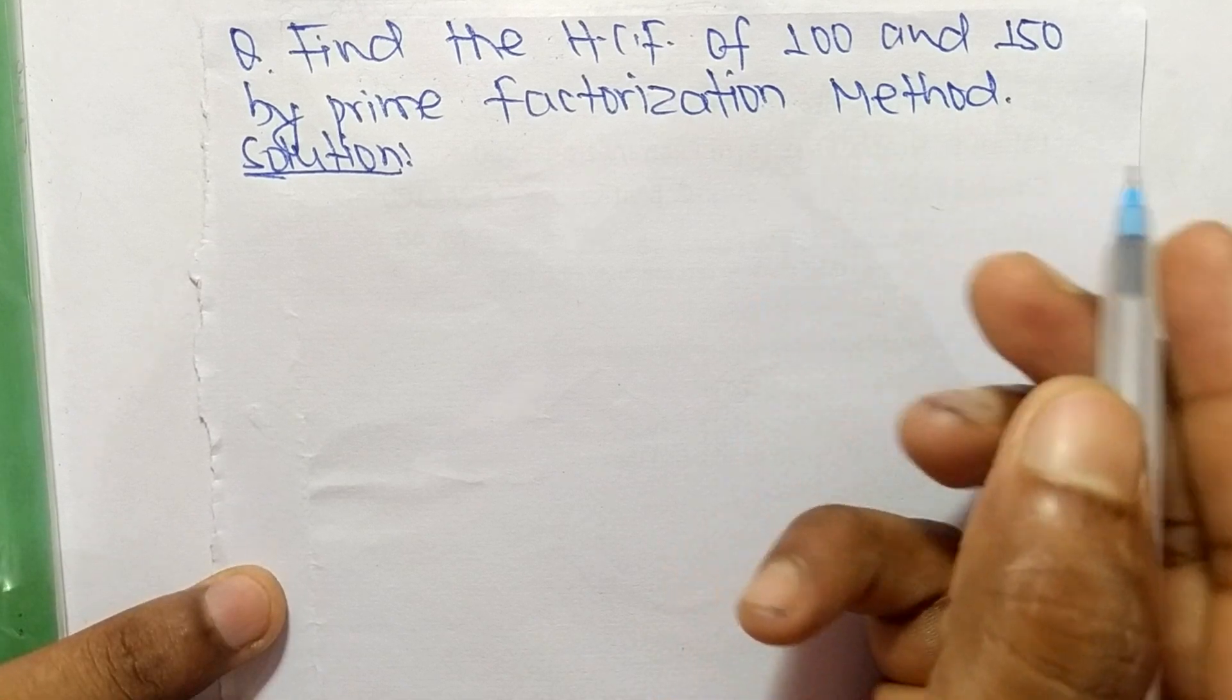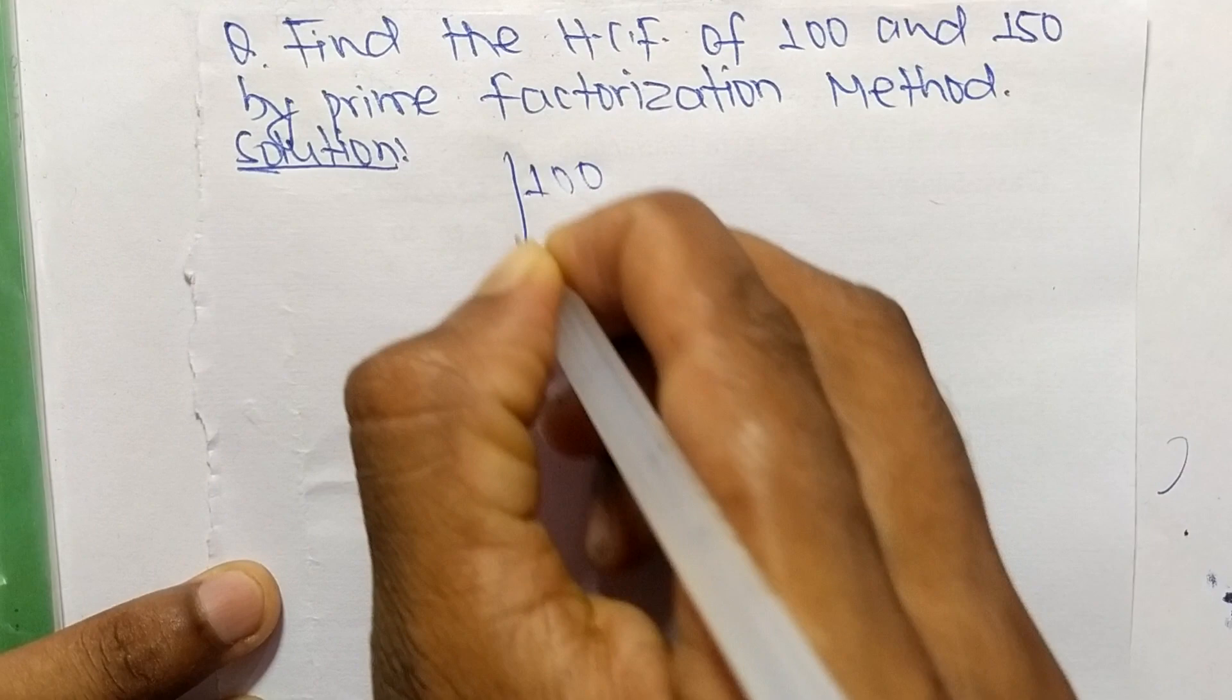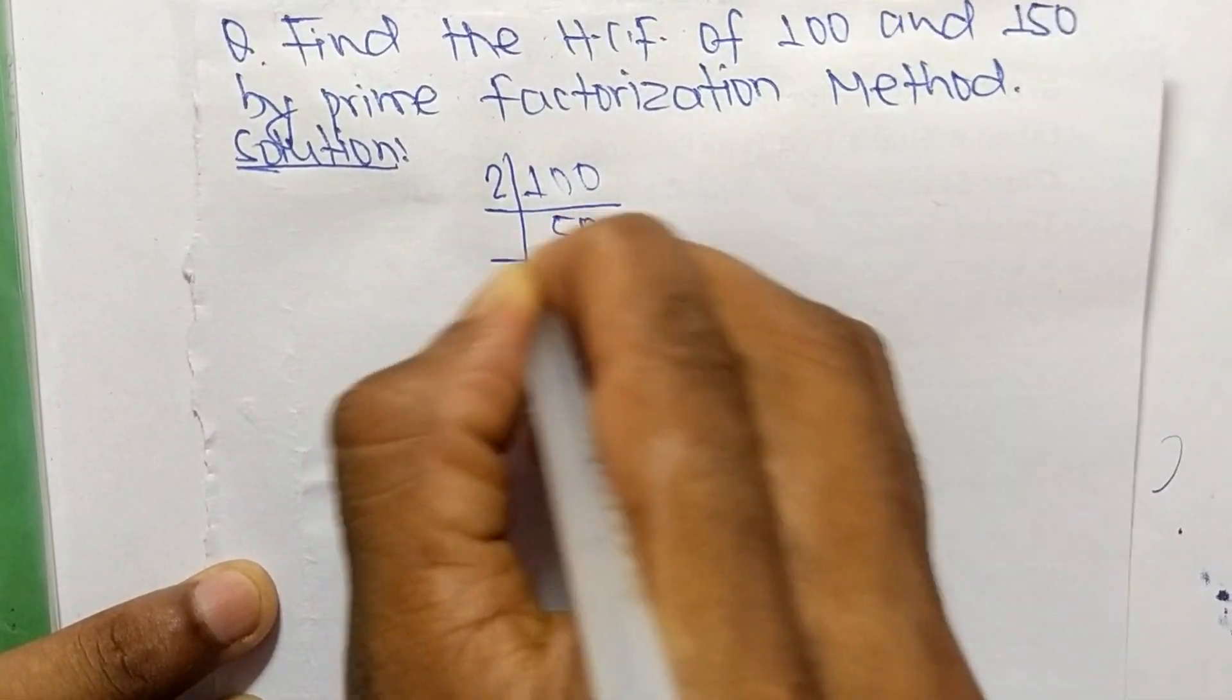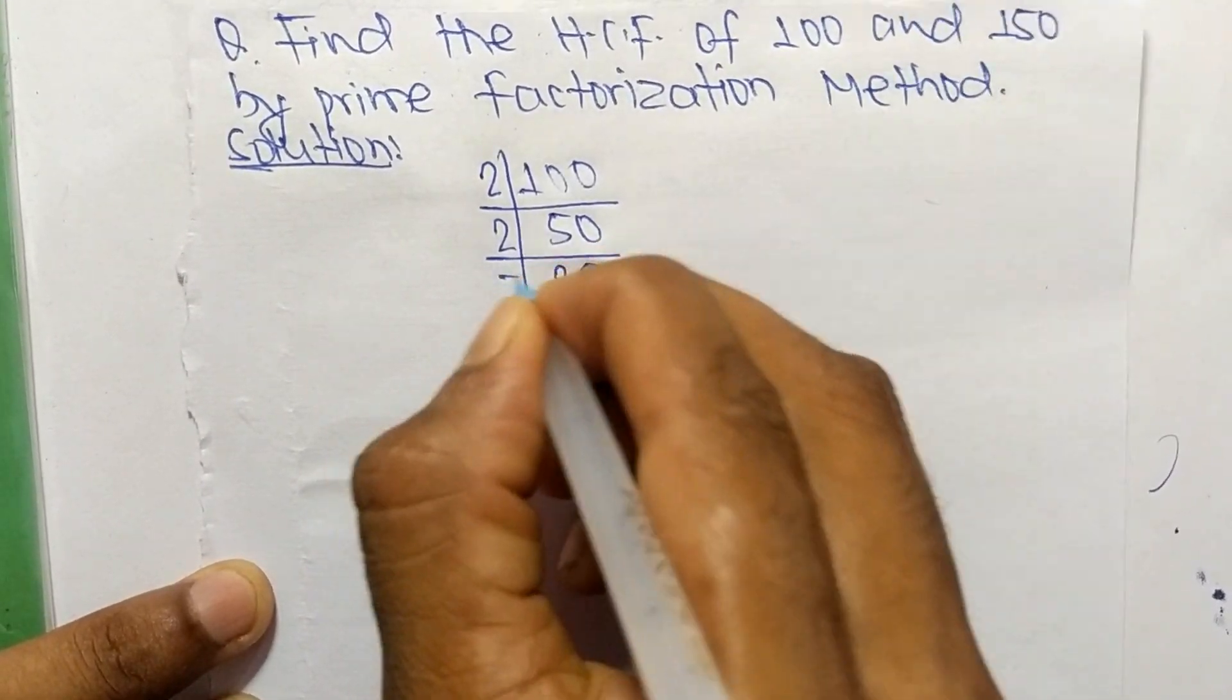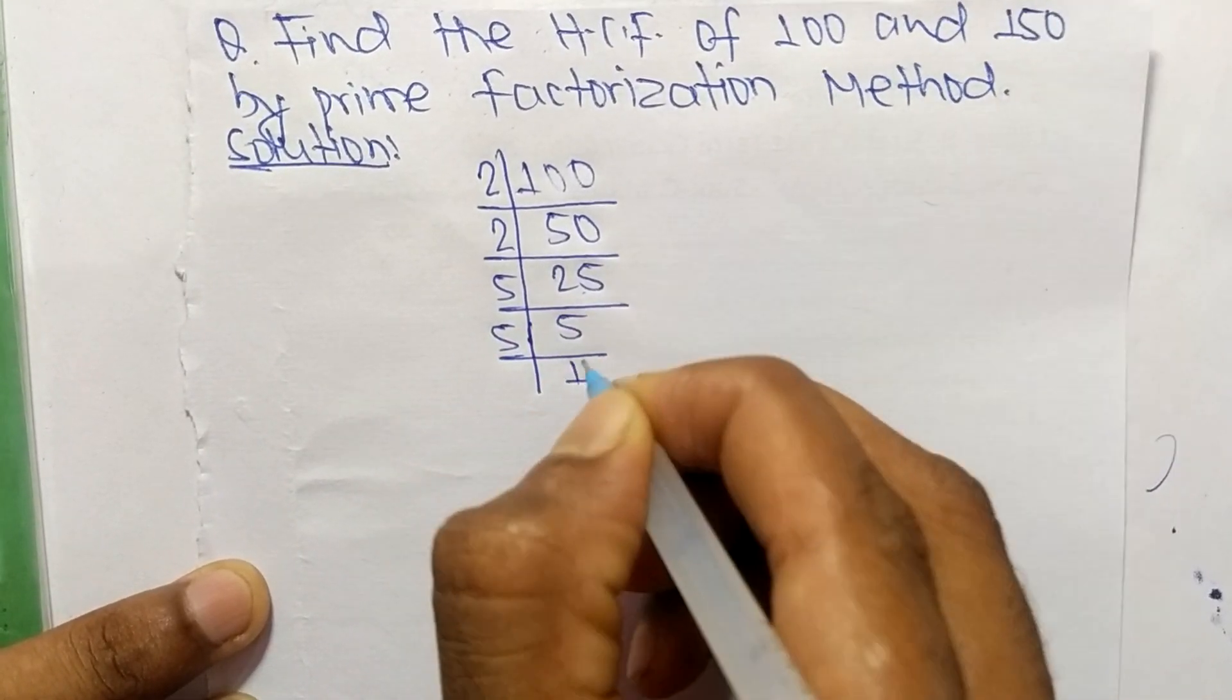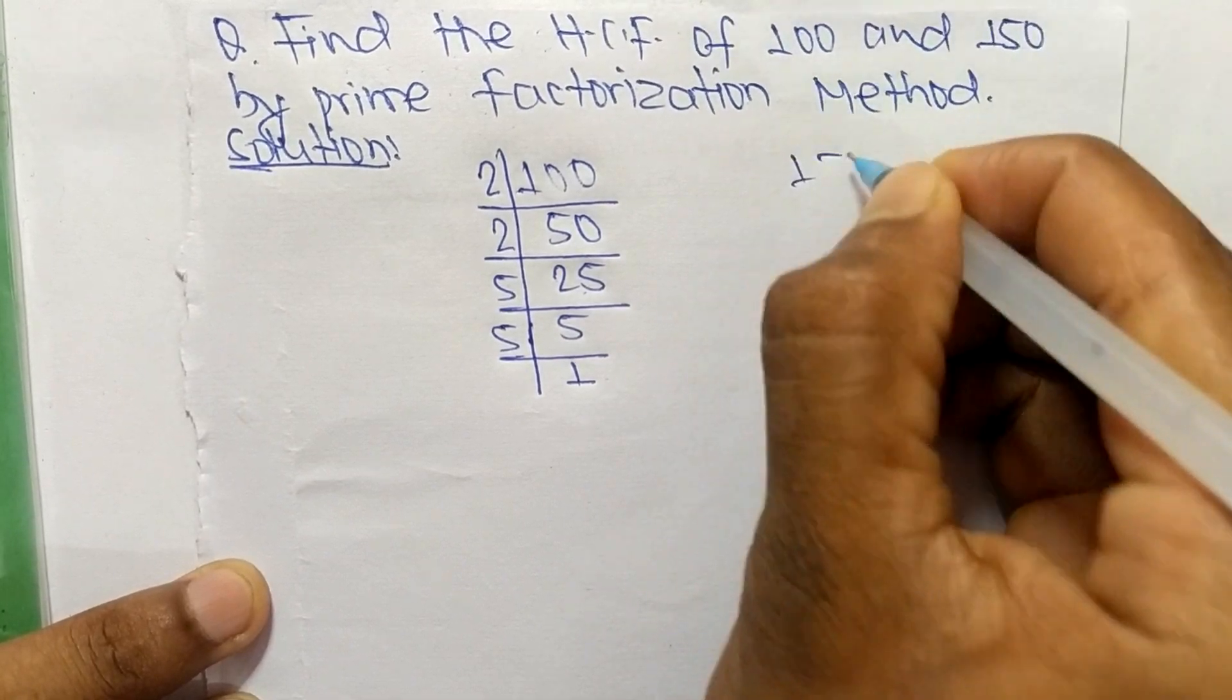So first we find out the prime factors of 100. It is 2 times 50 equals 100, 2 times 25 equals 50, 5 times 5 equals 25, and 5 times 1 equals 5. These are the prime factors.